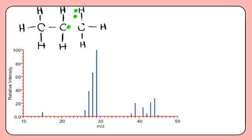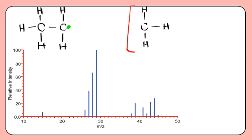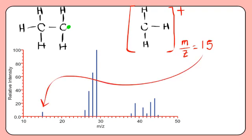Sometimes the bond may break differently. In this case, the positively charged ion with an m/z value of 15 will be detected and the neutral fragment will not.